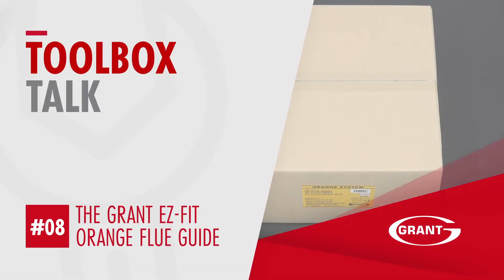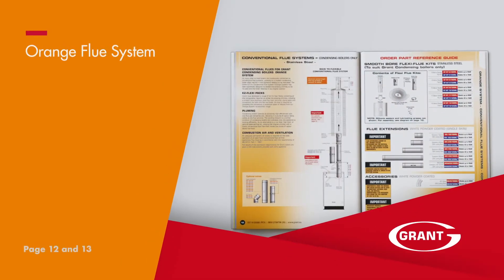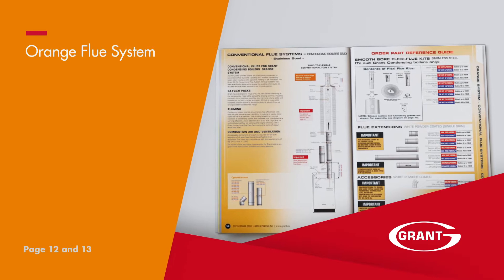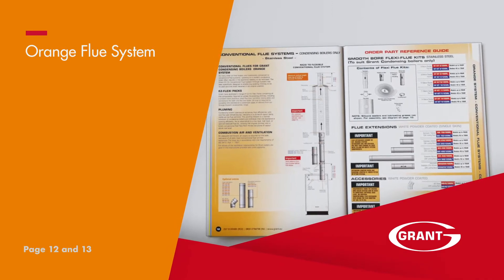The conventional flue or orange system, as found on page 12 and 13 of the flue guide, are designed to allow an existing masonry chimney to be utilized rather than to re-site the boiler.